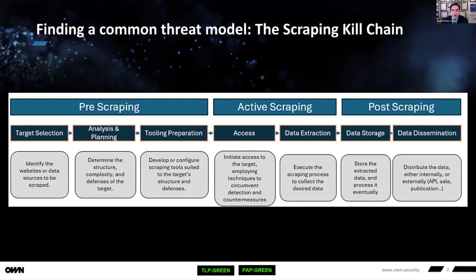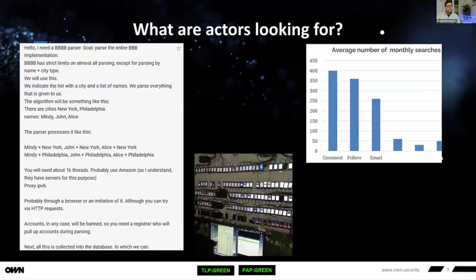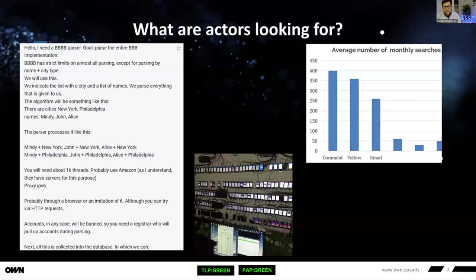Is there anything else you wanted to cover with the kill chain? I think it's a great way to think about this issue — pre-scraping, active scraping, and post-scraping — and a way to examine at each step where mitigations can be applied or where vulnerabilities are exploited by bad actors who are scraping. I wanted to talk about how we use what we call CTI to fight against scraping. CTI is cyber threat intelligence. If you've been in law enforcement or intelligence, it's very common: you gather data, sort it, analyze it, and then take decisions. We do CTI for scraping.